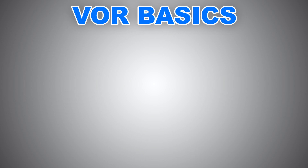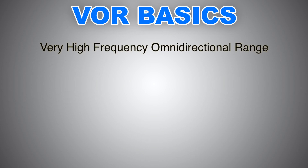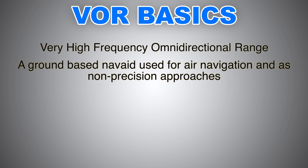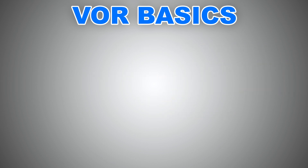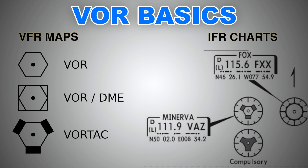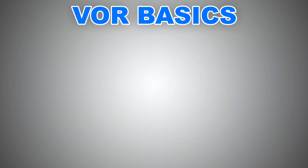Let's revise what we have seen in this video. VOR stands for Very High Frequency Omnidirectional Range. It is a navaid facility on the ground used for both air navigation and non-precision approaches. It operates in the VHF band from 108 MHz to 117.95 MHz inclusive. VOR signals are line-of-sight signals. These are the VOR symbols you may come across on both VFR maps and IFR charts. A VOR will only provide range information if it is paired with DME — Distance Measuring Equipment.